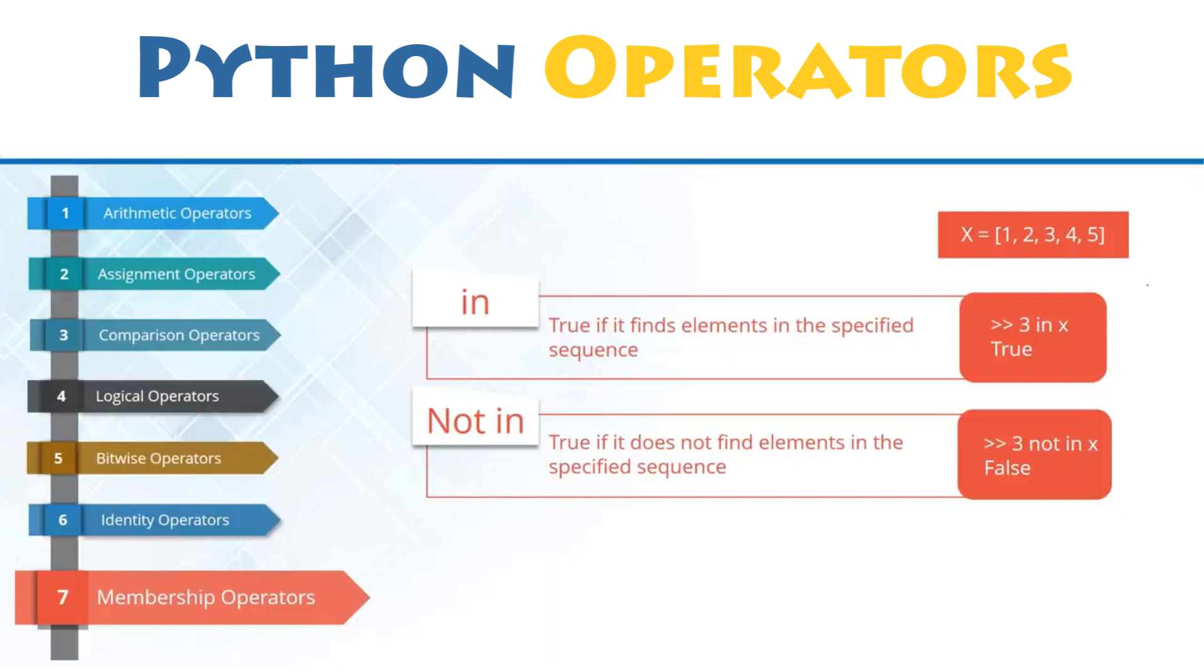Membership operators: in and not in are used to test whether a value or variable is found in a sequence, string, list, tuple, set or dictionary. Following are the membership operators that we have in Python and return a boolean.